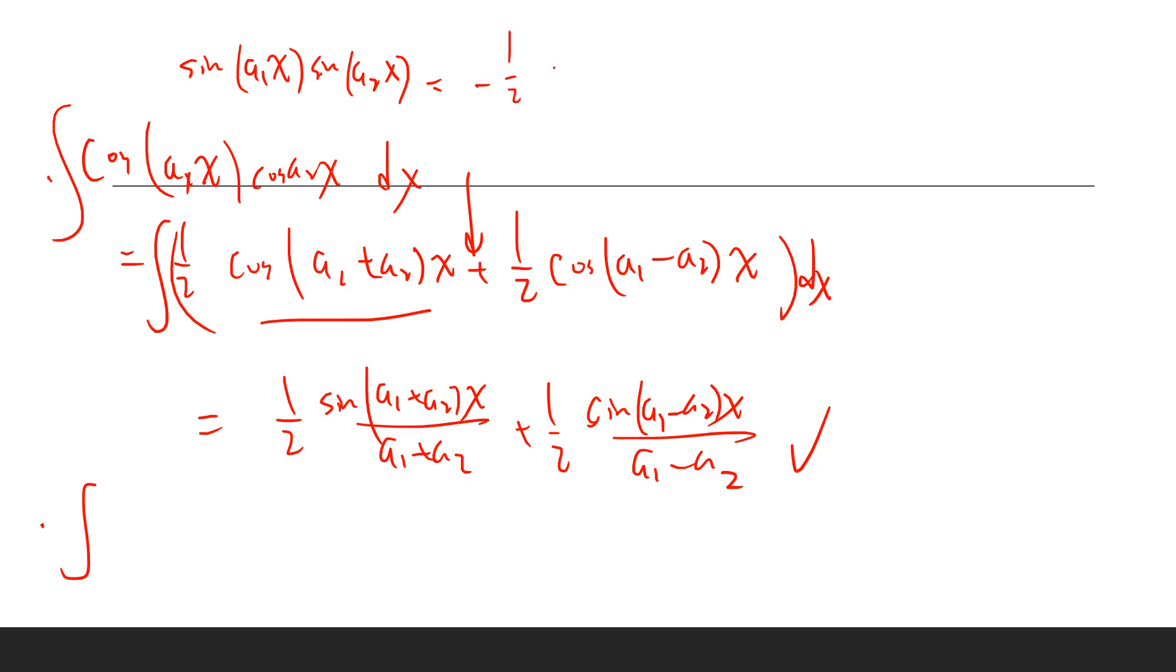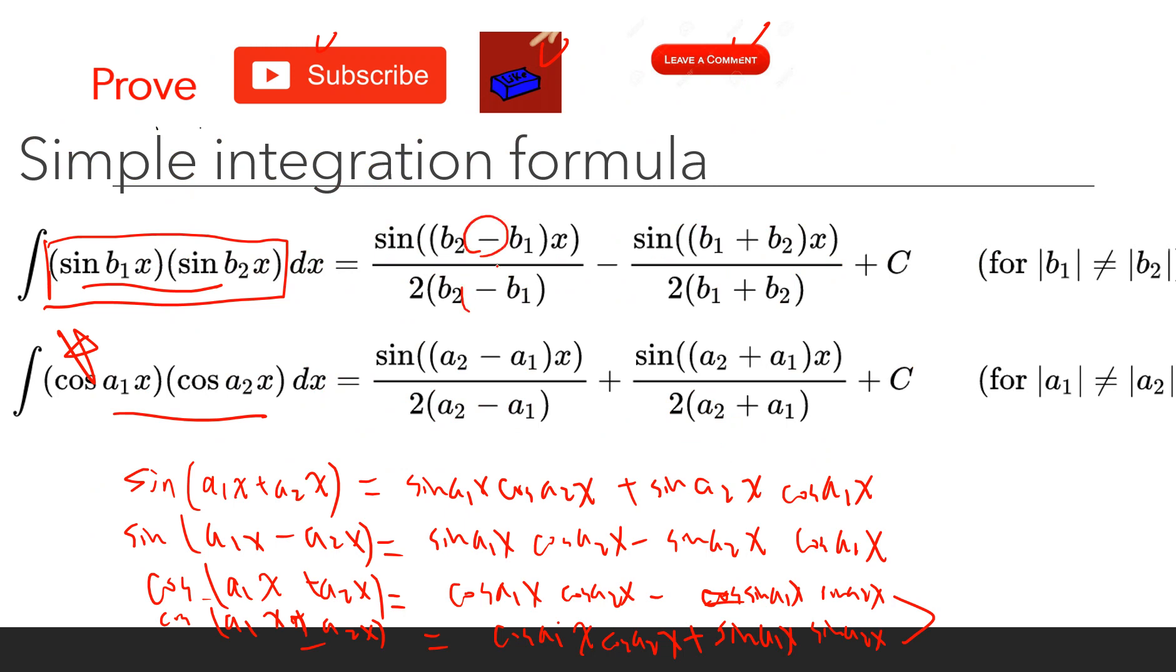But there's a minus sign here, so this is minus half cos(a1 + a2)x plus half cos(a1 - a2)x. Then we do the integration, so the minus sign becomes the positive term and the plus sign has a minus term.